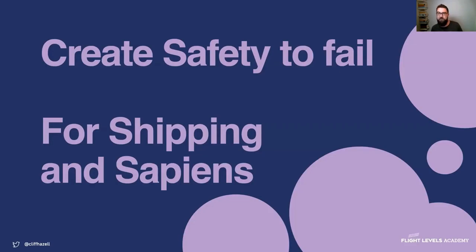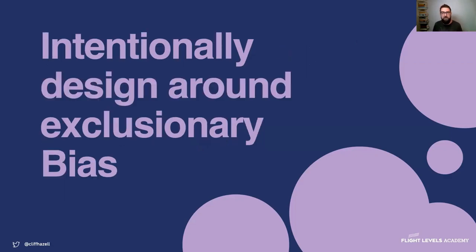What we want to try to do is create safety to fail — specifically for shipping and for sapiens. On the human side, we need to feel safe to contribute and bring our ideas forward. We also need to be able to try things technologically, in a business or product sense, knowing we're not going to get fired for making an innocent little mistake. I want to talk about how we could do this and give you a few examples — it's a big broad topic I can't completely solve in the time available.